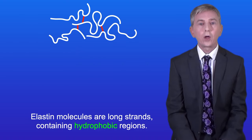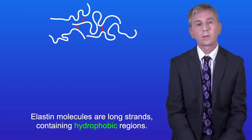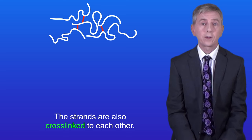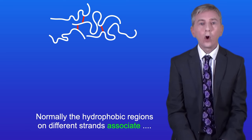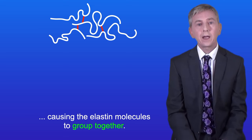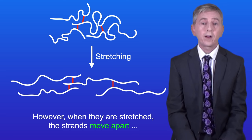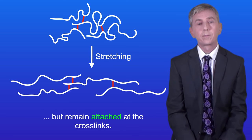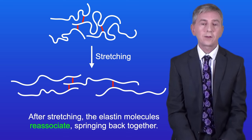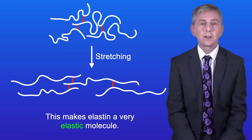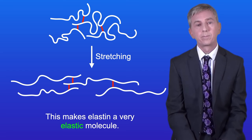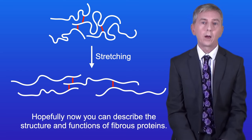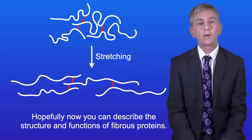Elastin molecules are long strands containing hydrophobic regions, and the strands are also cross-linked to each other. Normally, the hydrophobic regions on different strands associate, causing the elastin molecules to group together. However, when they're stretched, the strands move apart but remain attached at the cross-links. After stretching, the elastin molecules re-associate, springing back together, making elastin a very elastic molecule. Hopefully now you can describe the structure and functions of fibrous proteins.